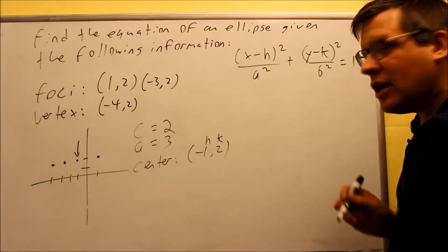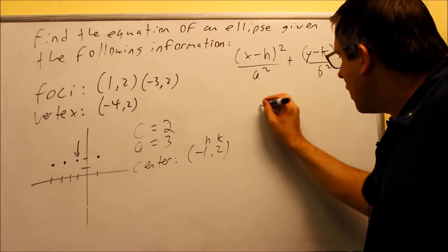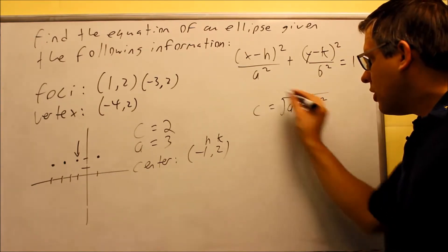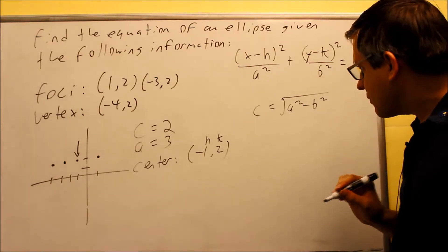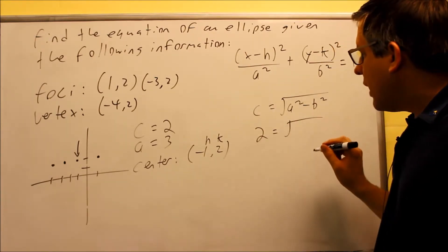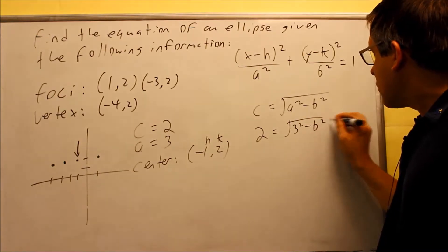The last thing I need to find is b. So once again, as we've been doing before in these examples, you're going to do the same process using this formula for c. We're going to put in c values 2. And I have a squared minus b squared. That's 3 squared minus b squared. I want to solve this one for b squared.